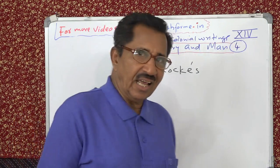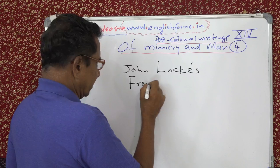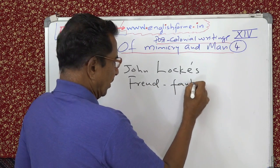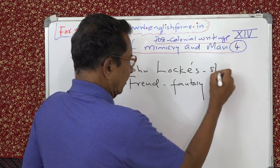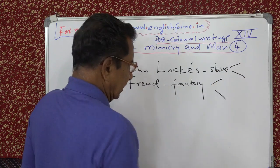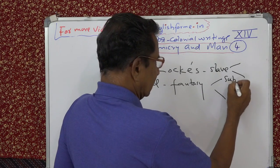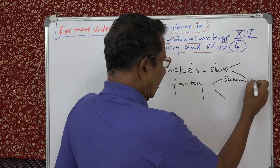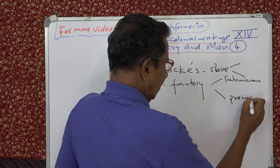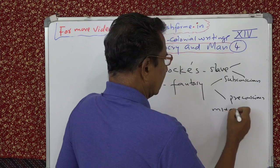Then another text is Freud's — the definition of fantasy. What is fantasy? Here it is the definition of slave with two meanings. Here is fantasy — that is between the subconscious and the pre-conscious. All he says it is like a mixed race, people of mixed race.